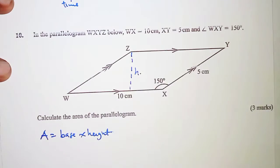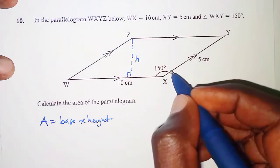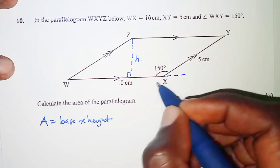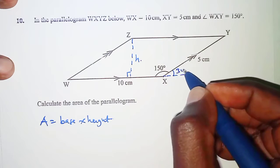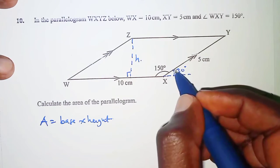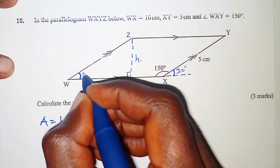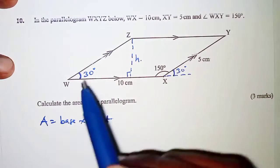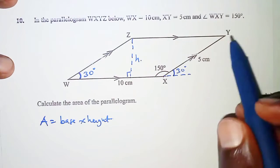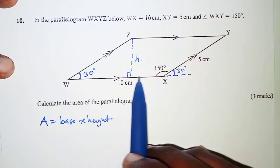The height line meets the base at 90 degrees. If we produce line WX, then the angle on a straight line gives us 30 degrees at that extension. Using corresponding angles — since WZ and XY are parallel lines with WX as a transversal — we get the 30-degree angle inside the triangle as well.